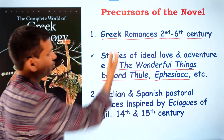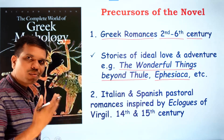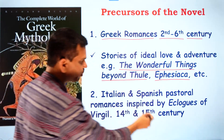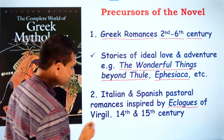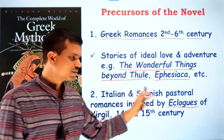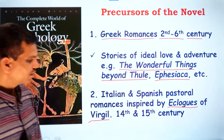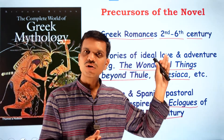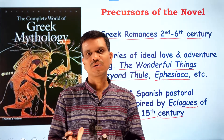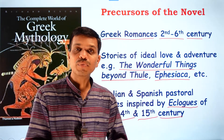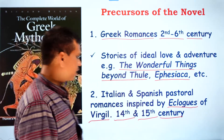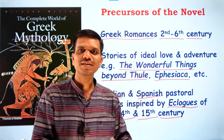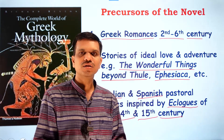The second precursor is Italian and Spanish pastoral romances, inspired by eclogues. These eclogues were composed by Virgil in Italy, and there are Spanish pastoral romances from the 14th and 15th centuries. These also played an important role in the development of the story. The term 'pastoral' refers to a setting in wild or rural areas.